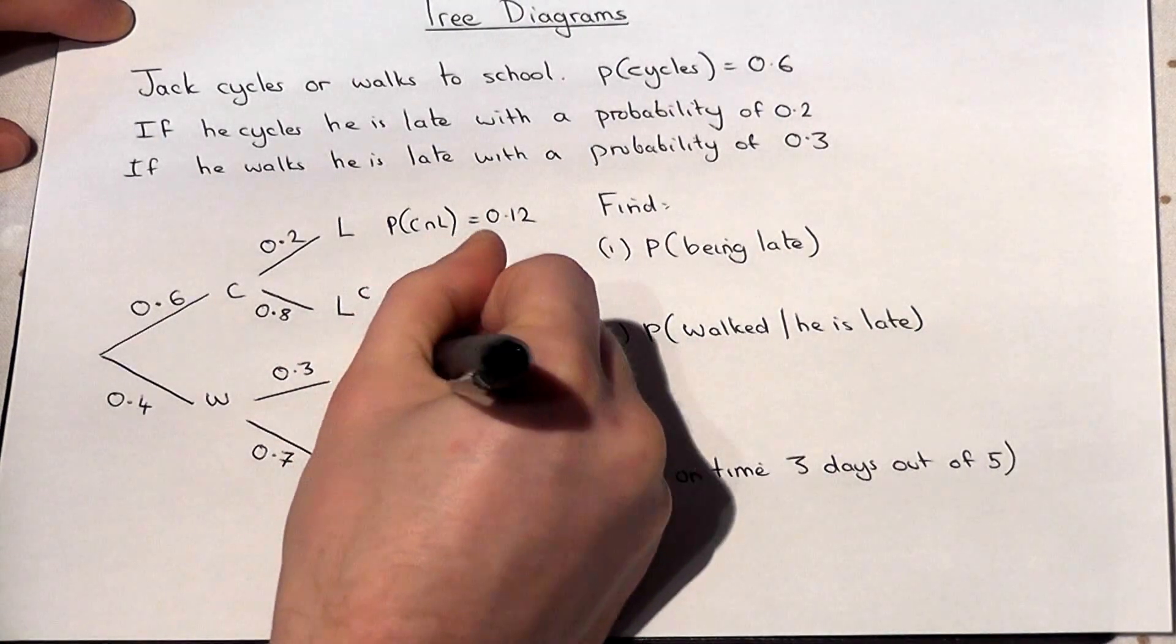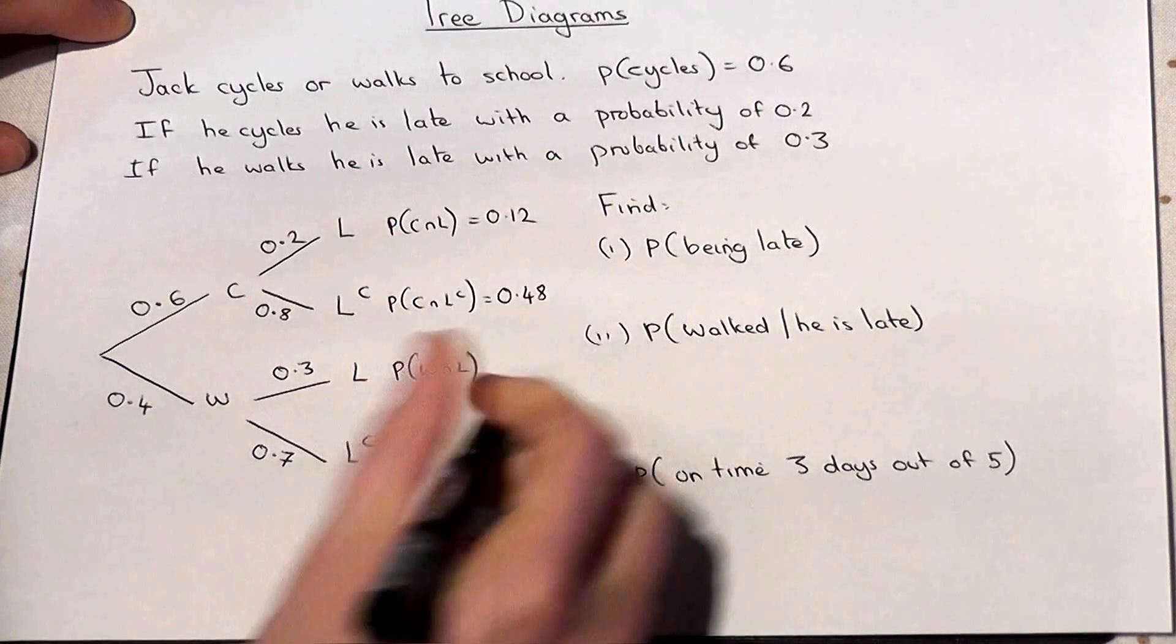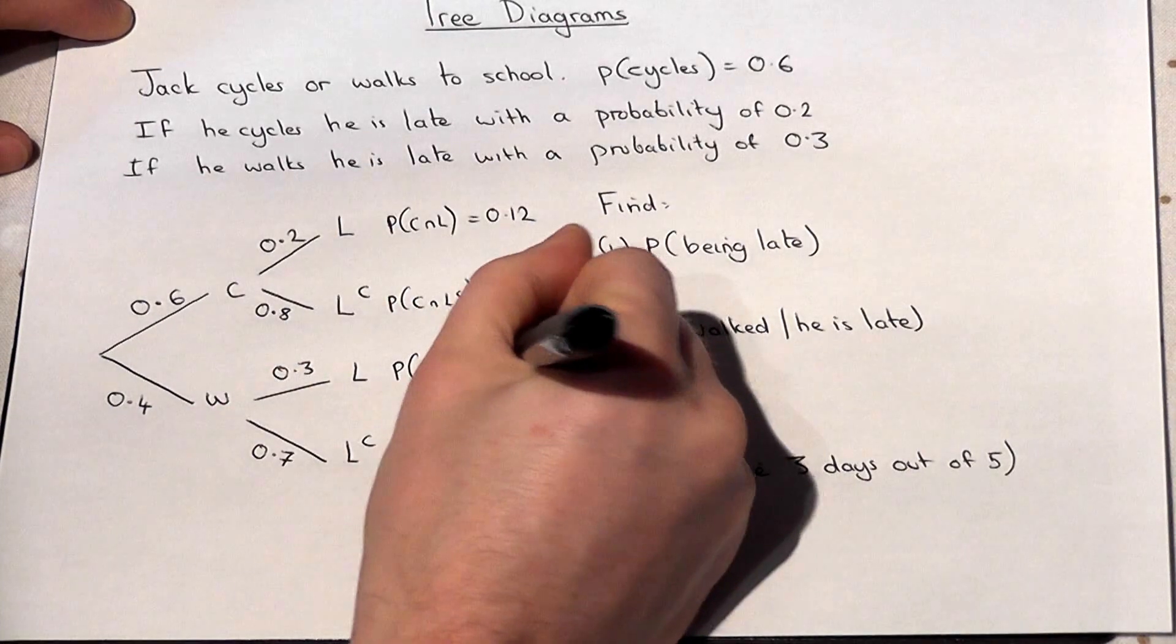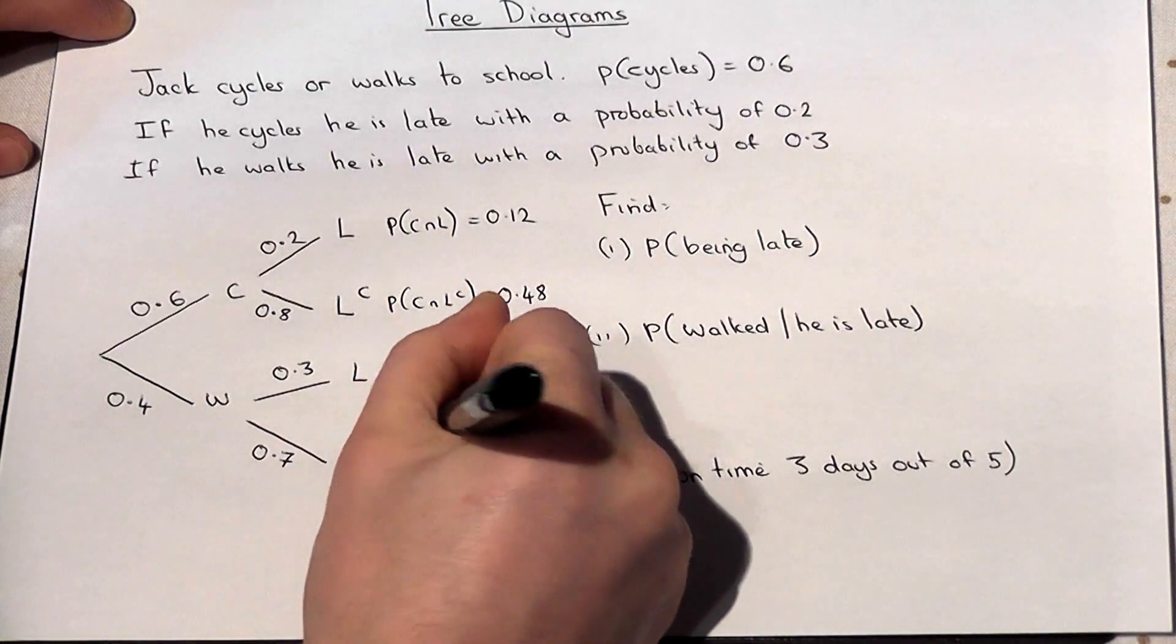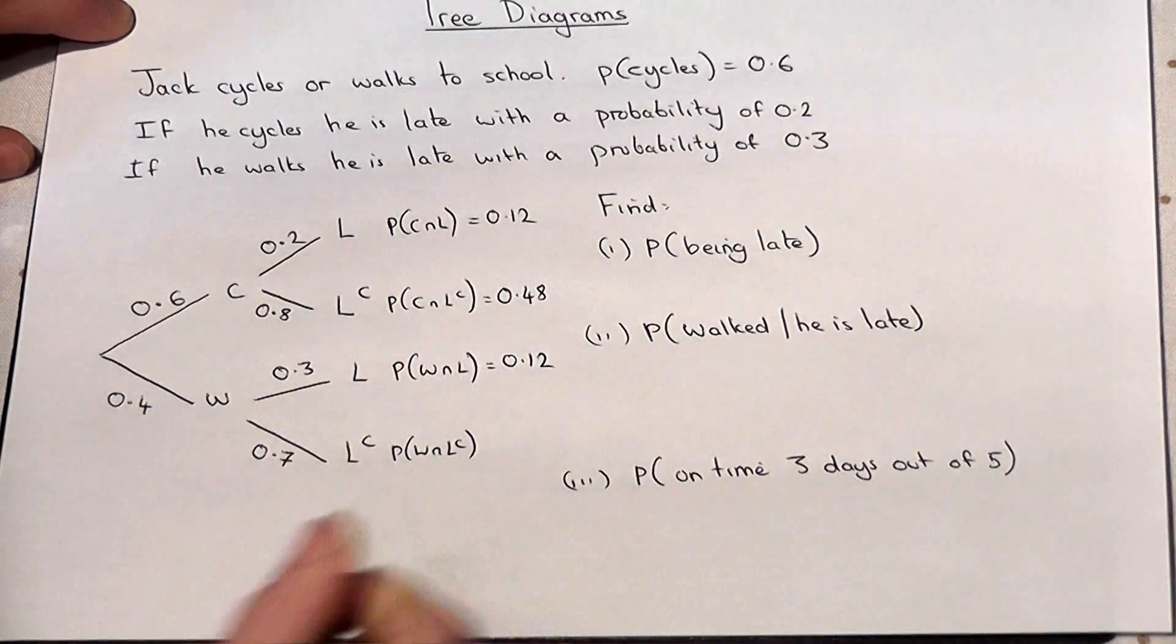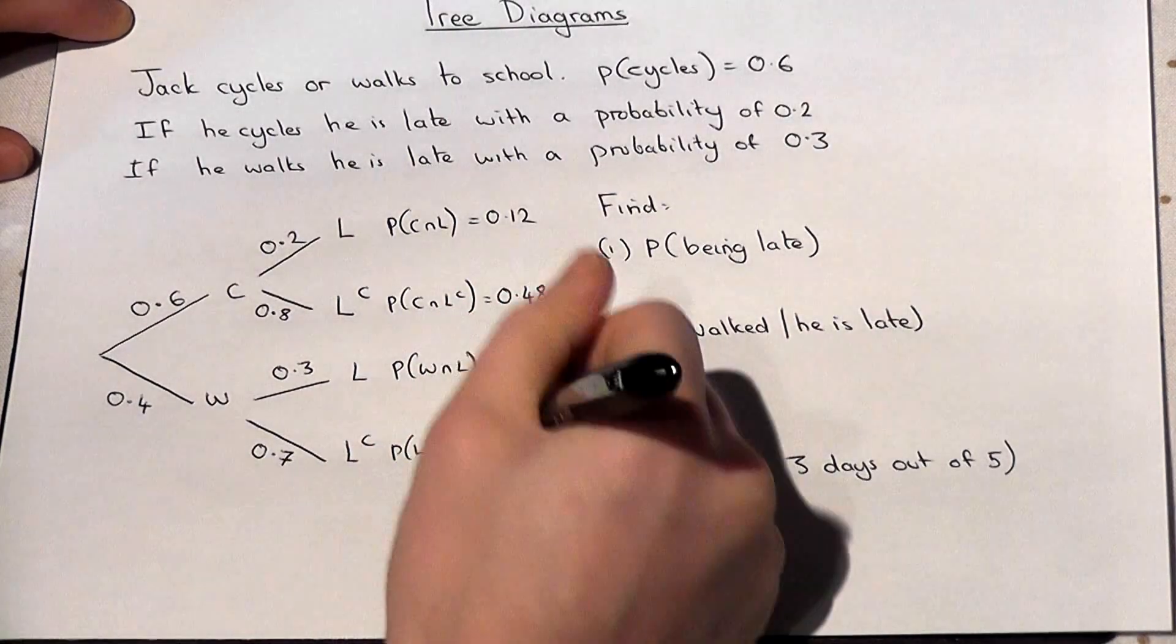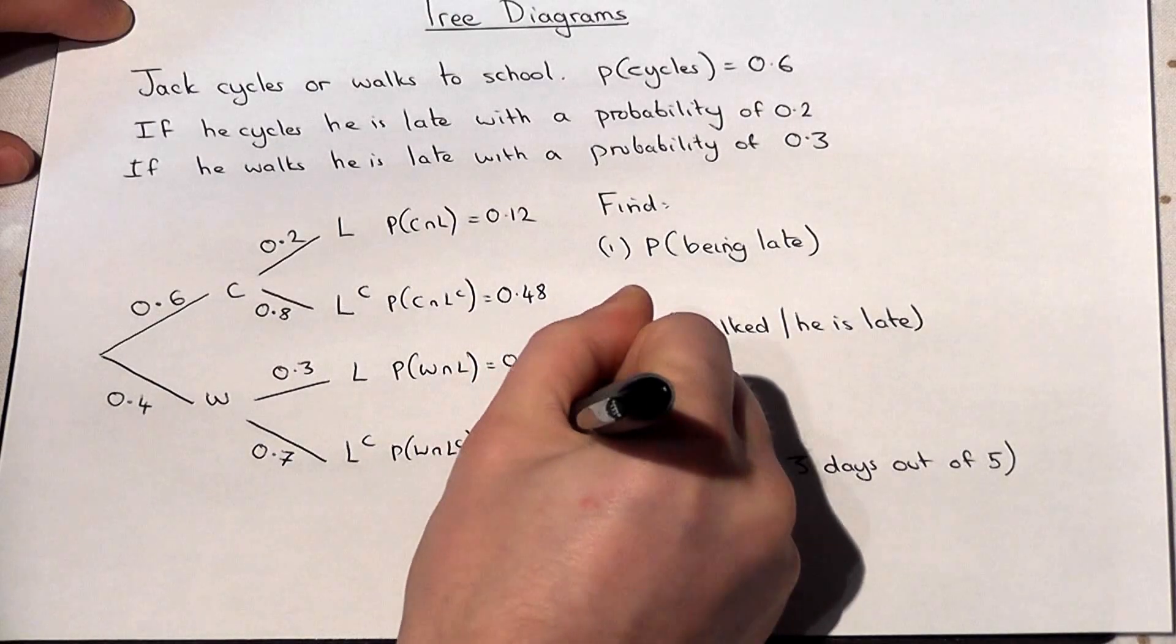The chance of walking and being late, 0.4 times 0.3, also 0.12. And the chance of walking and not late, 0.4 times 0.7, is 0.28.